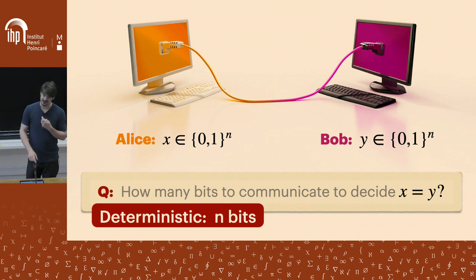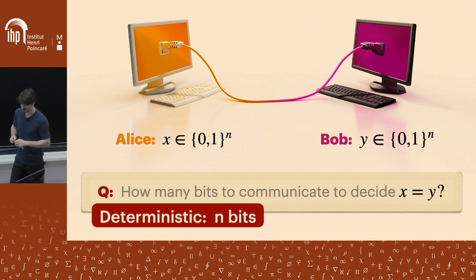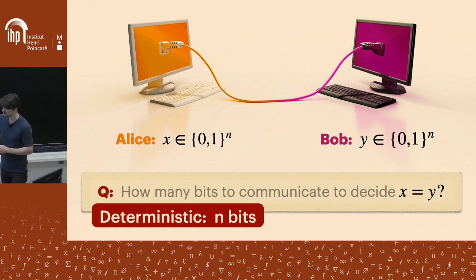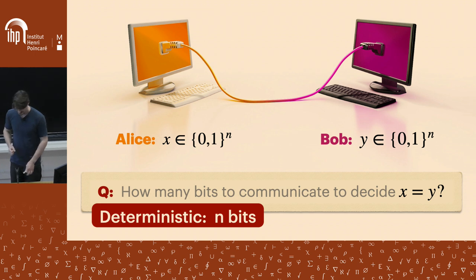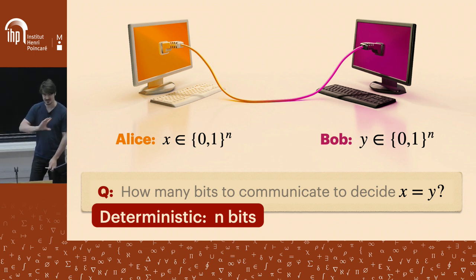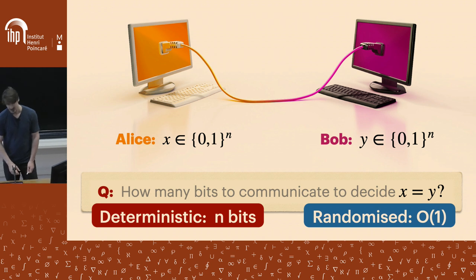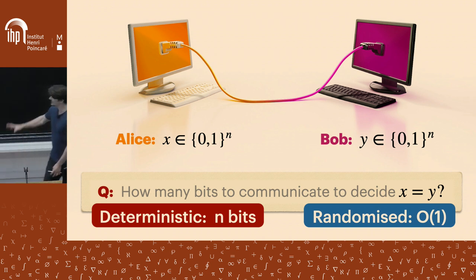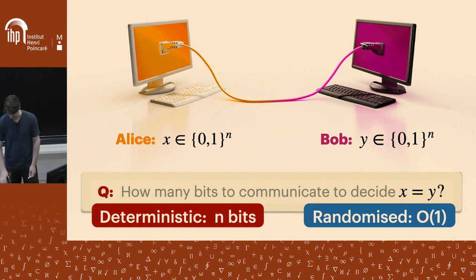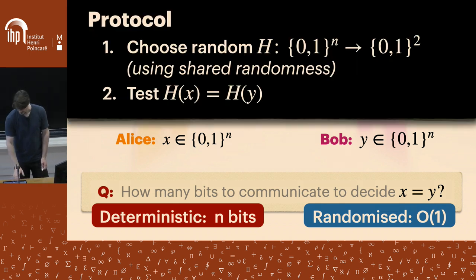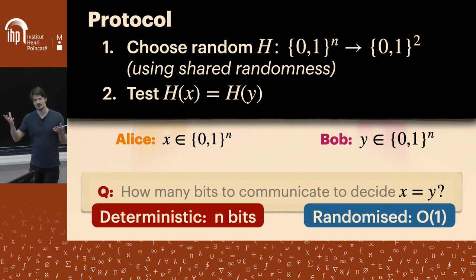Hashing requires randomness. In fact, the first exercise in this area of two-party communication is to show that any deterministic protocol that always has to be correct has no better strategy than sending the whole input. But if you're allowed randomness, the complexity drops dramatically — constantly many bits suffice.